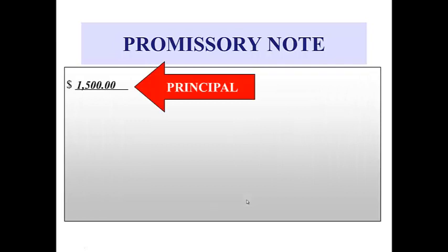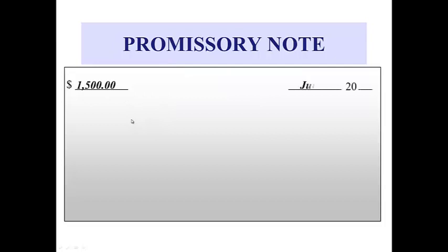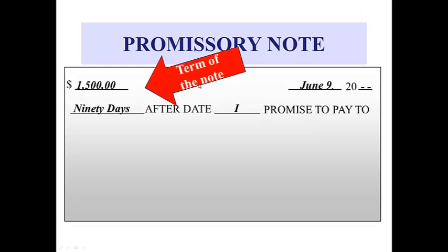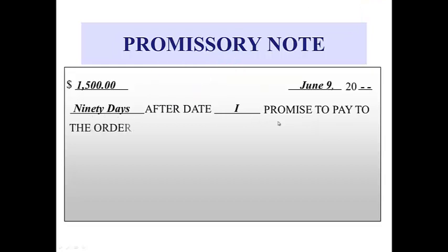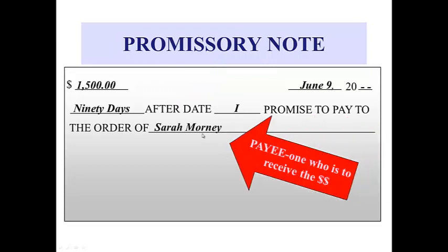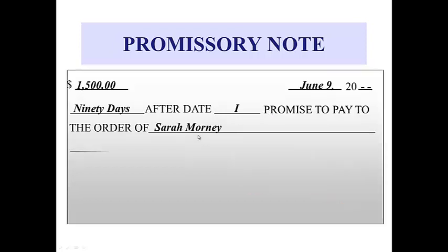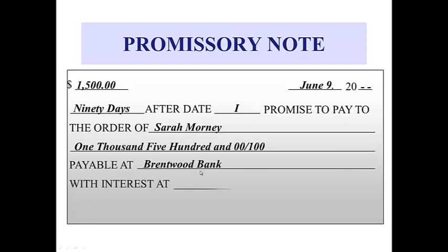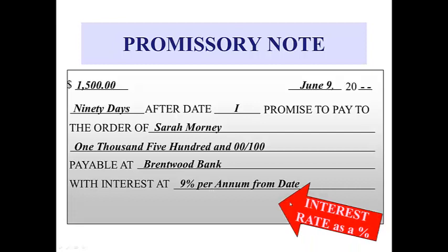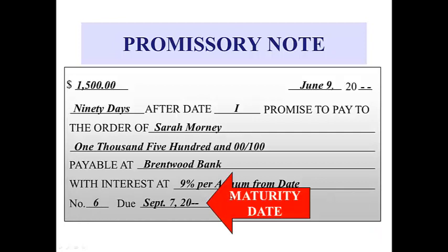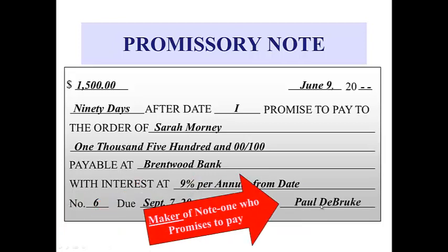To be legal, promissory notes need to be in writing and should include the principal, the date the note originated, the term of the note — which is how long the note is supposed to last — the payee or the person who is to receive the money, an interest rate which is always in the form of a percentage, the maturity date of the note which is the day the note is due, and the maker's signature. The maker is the person who promises to pay the amount of money. If the note is not signed by the maker, the note is not legal.